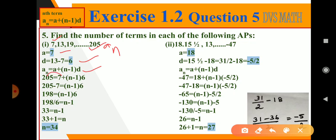205 minus 7 is equal to n minus 1 into 6. So if you subtract 205 minus 7, we'll get 198, so n minus 1 into 6. Now here 6 is multiplied to n minus 1. If we take to the LHS, it becomes division.